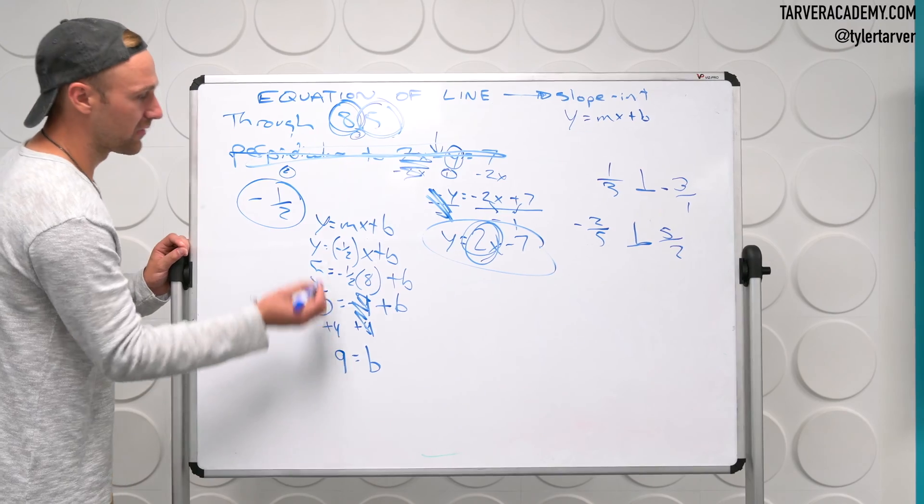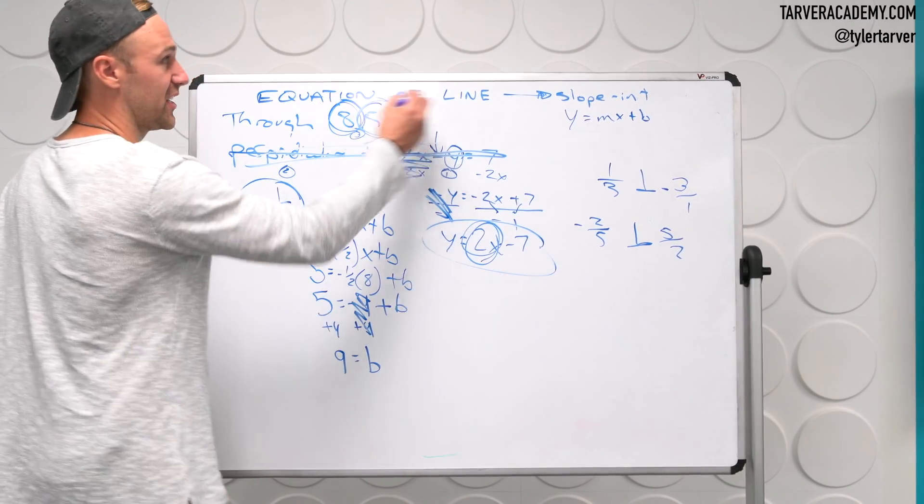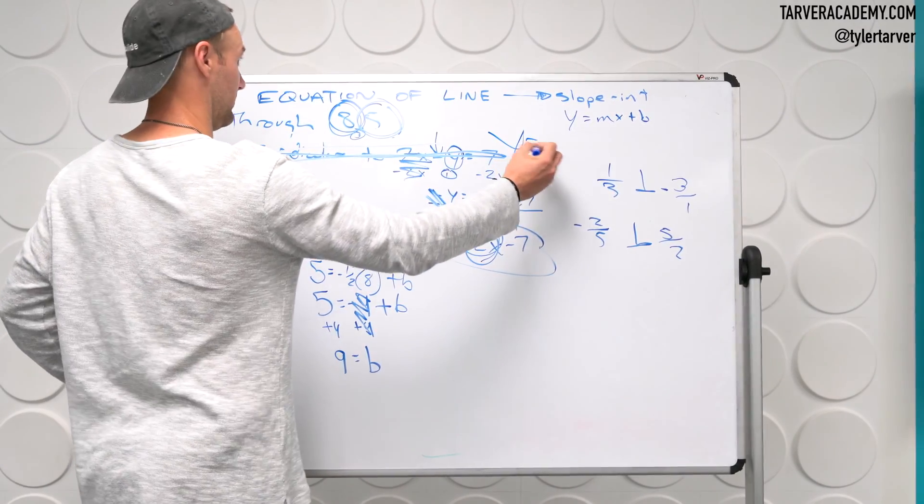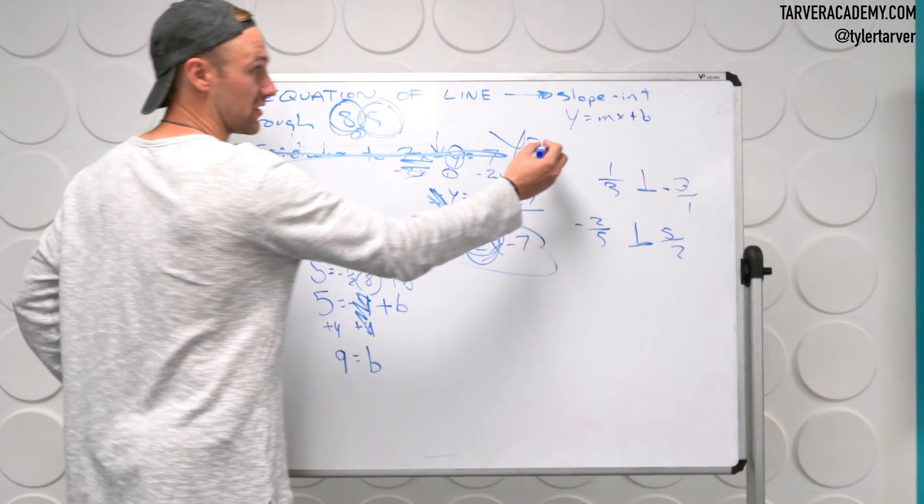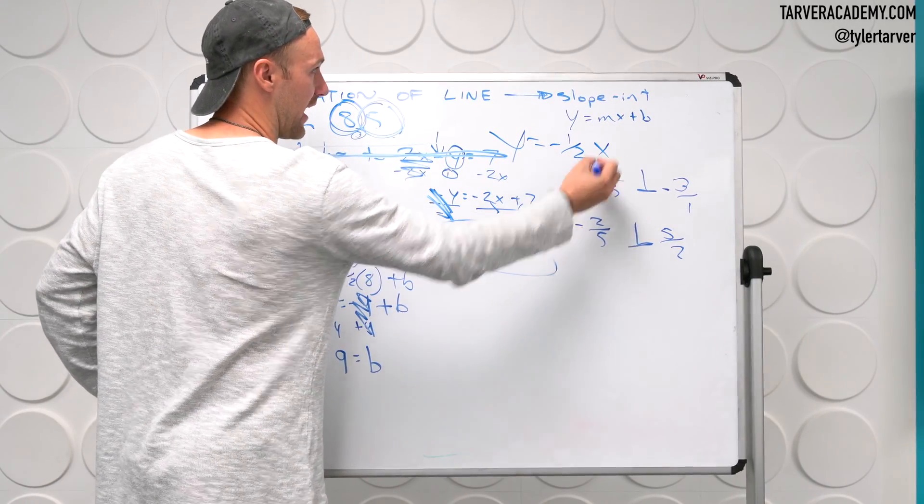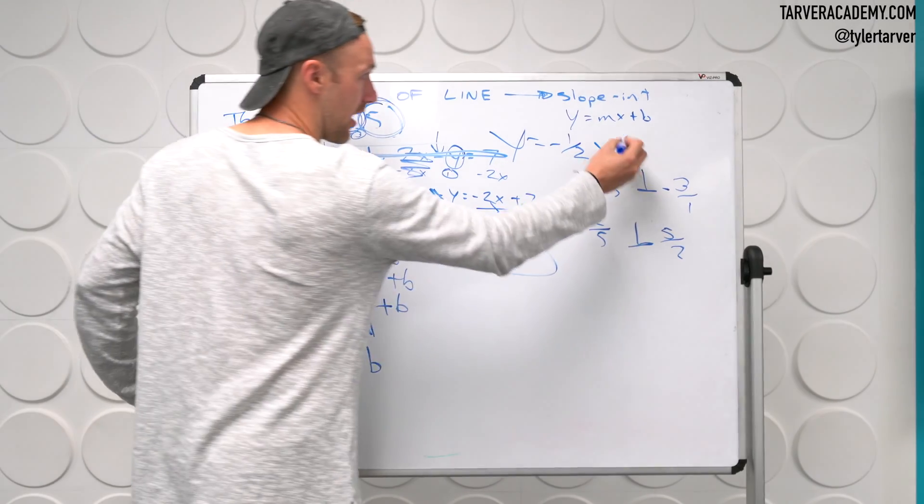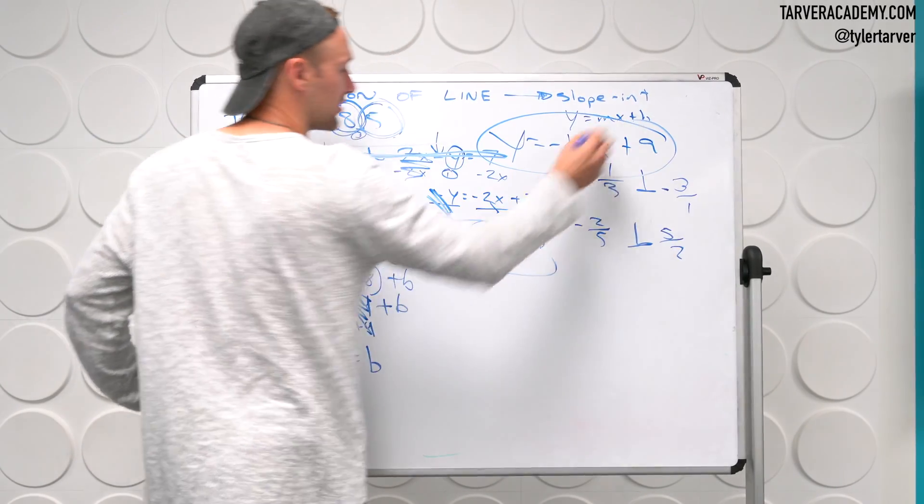Okay, so I know my B is 9, so whenever I solve it, equation of the line, Y, sorry, it burped inside my head, Y equals negative 1 half X plus 9. And that'd be the answer.